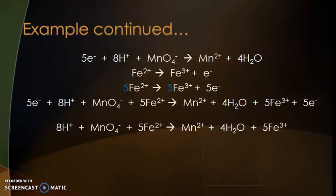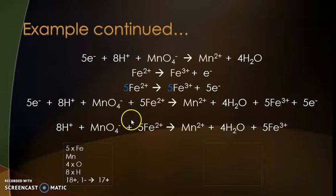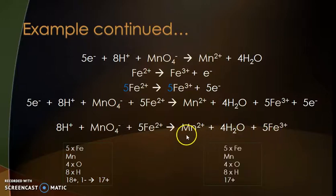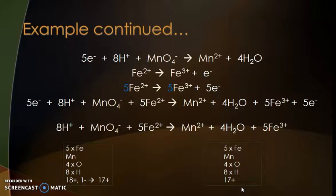On the left-hand side: 5 Fe2+ ions, 1 manganese, 4 oxygens, 8 hydrogens, and a total of 17+ charges — that's 5×2=10 from the iron, plus 8×1=8 from the H+, minus 1 from permanganate: 10+8−1=17. On the right-hand side: 5 Fe3+ ions, 1 manganese, 4 oxygens, 8 hydrogens, 5×3=15 plus 2 gives 17 pluses. All atoms and charges are balanced — the equation is correct.